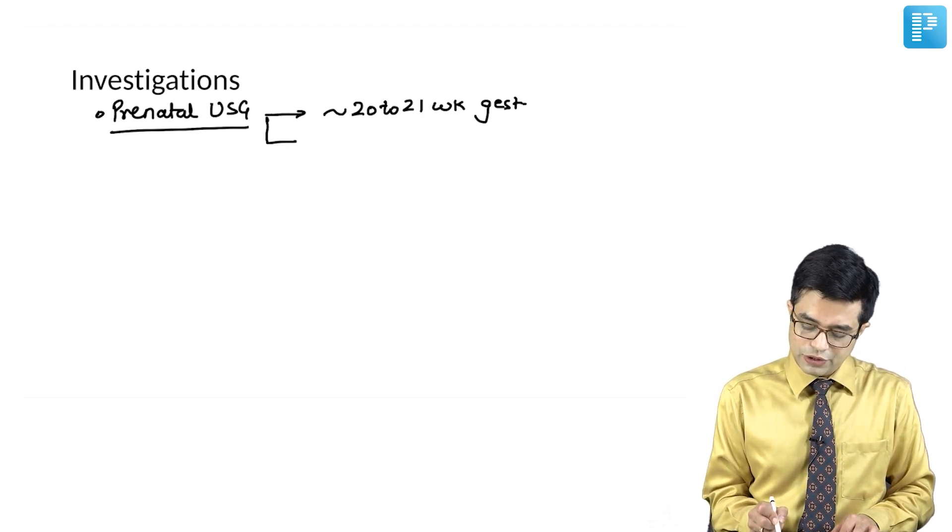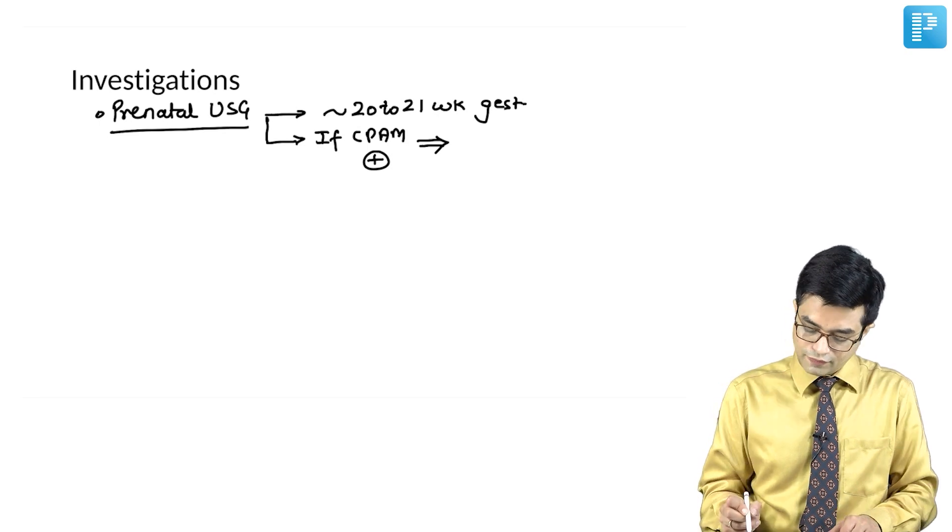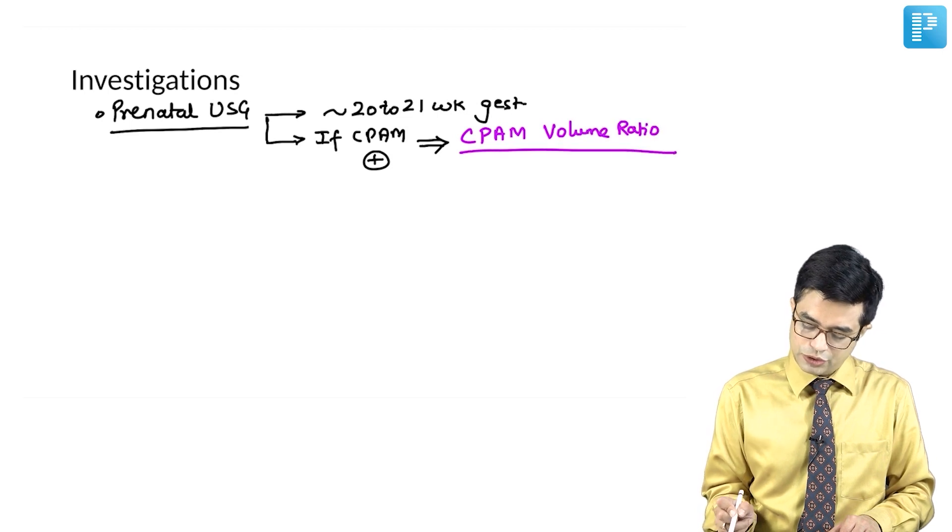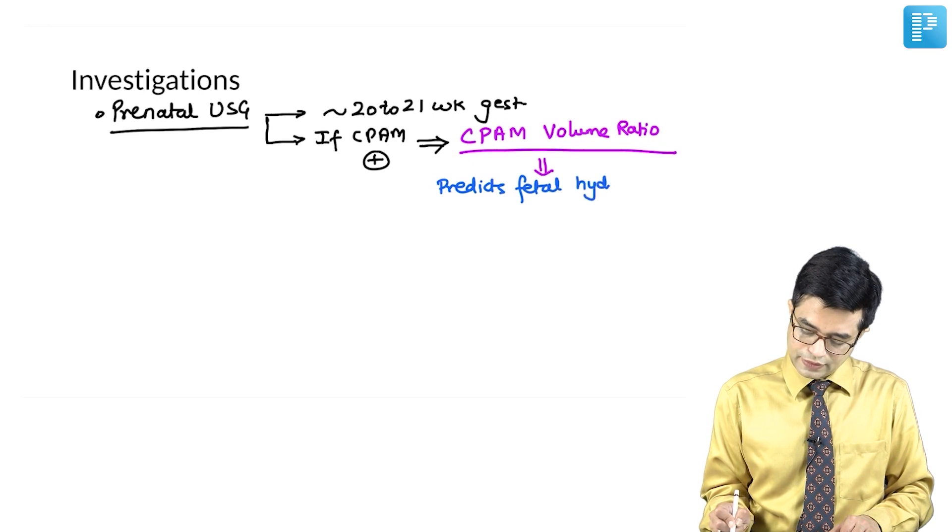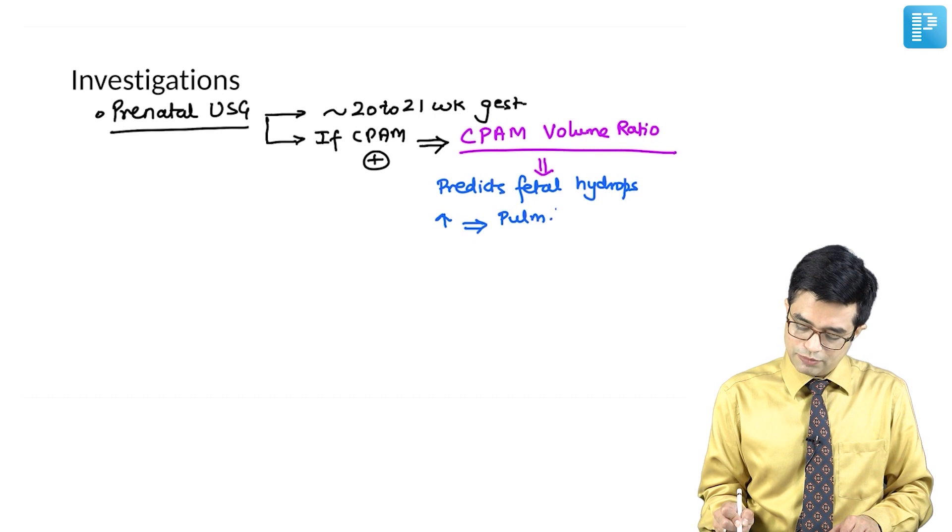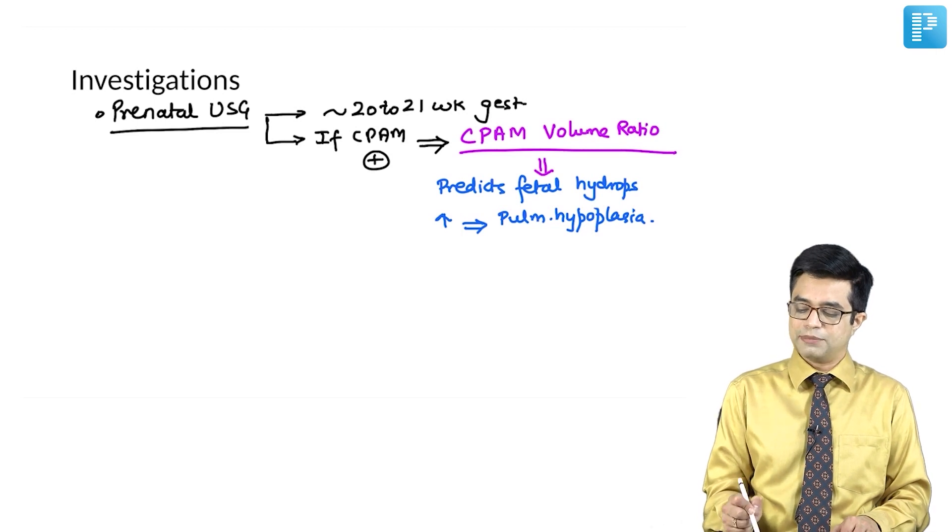And prenatal ultrasound, if CPAM is present, we always calculate a value, a ratio called the CPAM volume ratio. The importance of this CPAM volume ratio is that it predicts the occurrence of fetal hydrops. And if CPAM volume ratio is very high, it also indicates development of pulmonary hypoplasia because the large cyst may encroach upon the normal lung tissue and cause pulmonary hypoplasia.